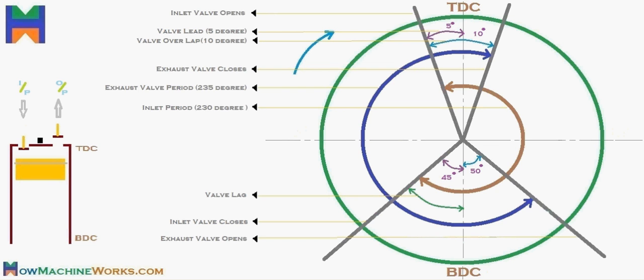In the theoretical concept, we believe that the inlet valve should open at TDC — that is at the top dead centre — and it should close when the piston reaches the bottom dead centre, which is almost 180 degrees of crankshaft rotation from top dead centre to bottom dead centre.